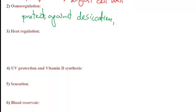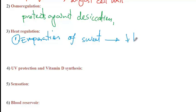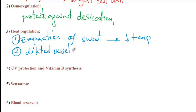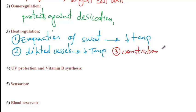The skin is also important for heat regulation. One mechanism is by evaporation of sweat from the skin, which lowers the body temperature. There is also radiant heat loss from dilated vessels — once vessels are dilated, heat can be dissipated from the skin surface, decreasing body temperature. On the other hand, constriction of vessels leads to heat retention, helping maintain higher body temperature.